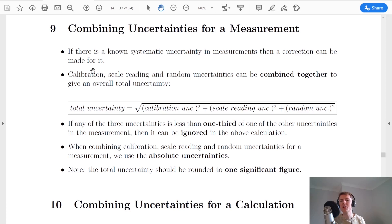Now the first thing to point out is that if there is a known systematic uncertainty in your measurements, then a correction can be made for it. That means if all your measurements are either all too high or all too low, then you can make a correction for it.